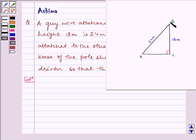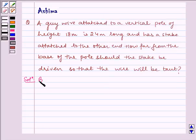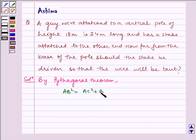Now here we have got triangle ABC which is right angle at C. So by Pythagoras theorem AB square is equal to AC square plus BC square which implies 24 square is equal to AC square plus 18 square.